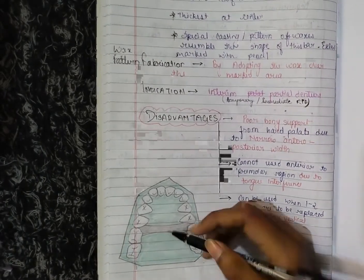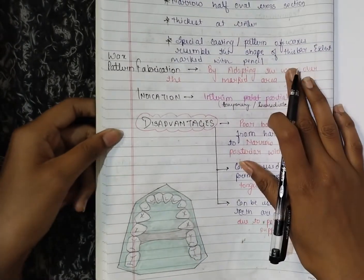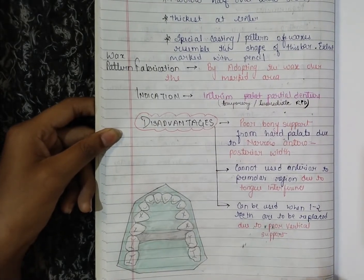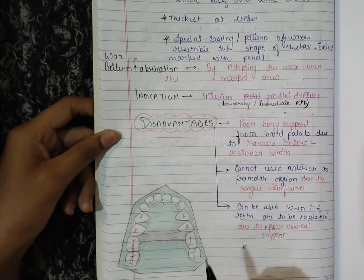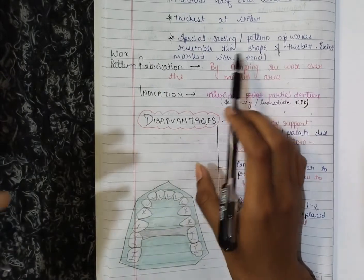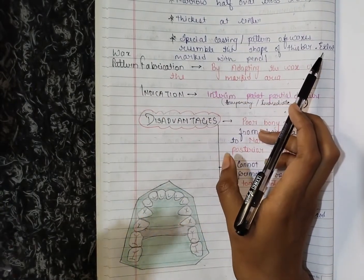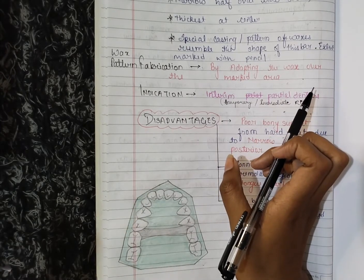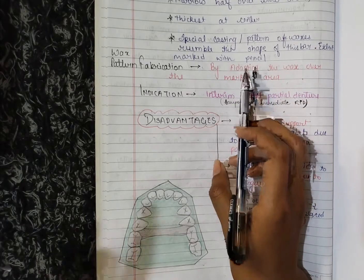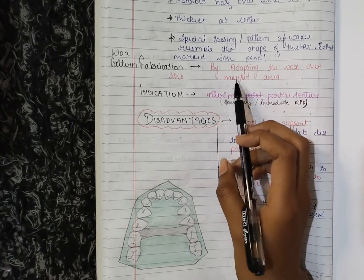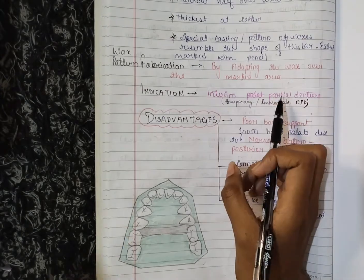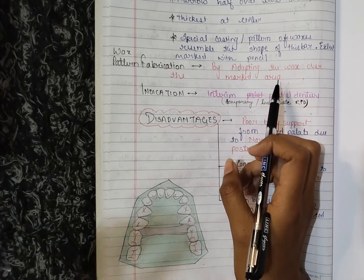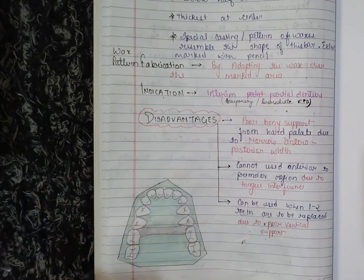Here is the diagram of the single posterior palatal bar. It is a bar running across the palate with a narrow half oval cross-section — thickest at the center. A special casting pattern of wax is used to resemble the shape of this bar. The extent is marked with a pencil, and for wax pattern fabrication you adapt the wax over the marked area to extend the region.